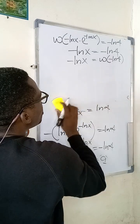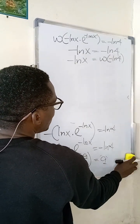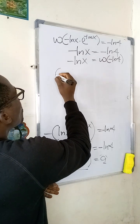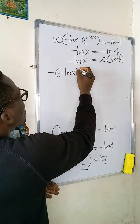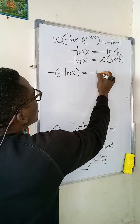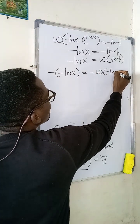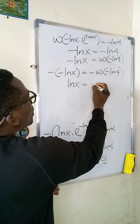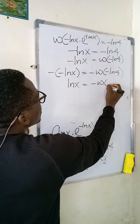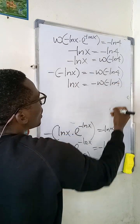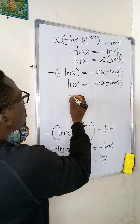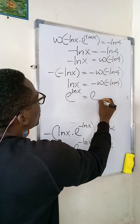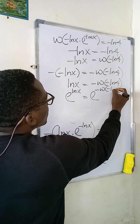At this point I need to apply the exponential function to both sides. Multiplying both sides by negative one gives ln(x) equal to negative W of negative ln(4). Taking e of both sides: e^(ln x) equals e to the power of negative W(negative ln(4)).